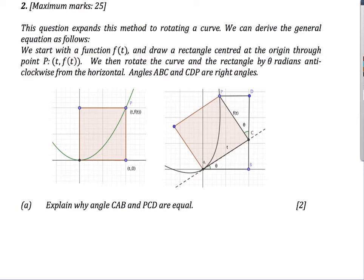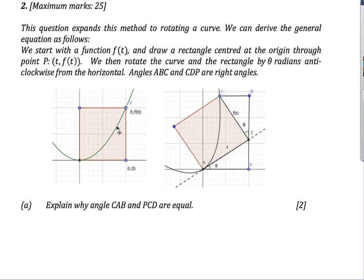Now we expand the question to the more interesting case: rotating a curve. We can take any curve — y = sin(x), y = x², y = x³ + 3x — and rotate it around the origin to find the Cartesian equation. The way to do it is to imagine what happens to an arbitrary point. We draw a rectangle; a point starts at (t, 0) and the corresponding point on the curve is (t, f(t)). After rotating by theta, we need to find the new coordinates.